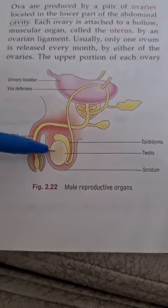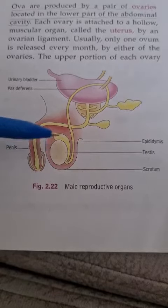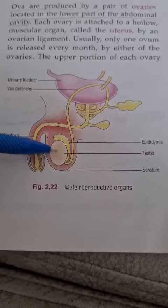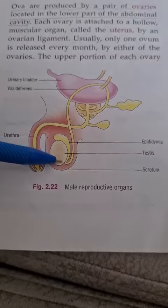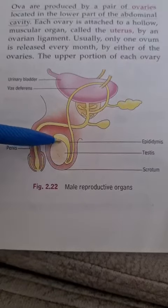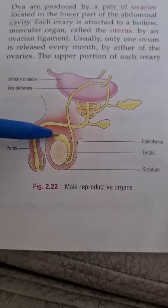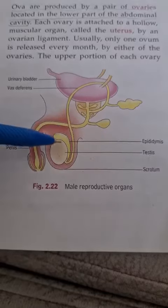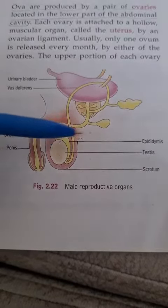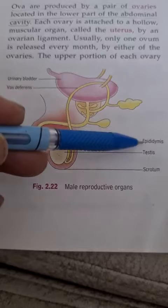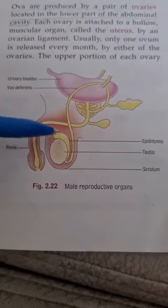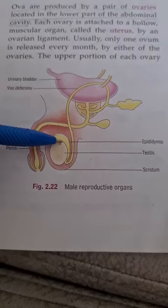Sperms — male gametes — are produced inside these testes, and after their production they are passed to one elongated tube-like structure which covers the upper part of the testes, called the epididymis. Here the sperm get mature.